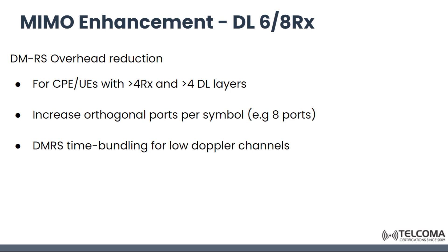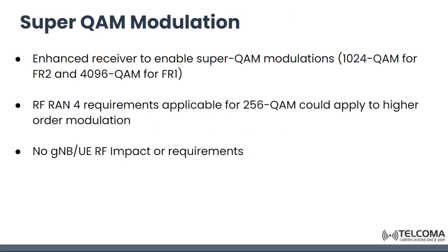Next is super QAM modulation — QAM stands for quadrature amplitude modulation. An enhanced receiver can enable super QAM modulation: 1024 QAM for frequency range 2 and 4096 QAM for frequency range 1. There is a RAN4 requirement applicable for 256 QAM that could apply to higher order modulation, with no gNodeB or UE RF impact or requirements.